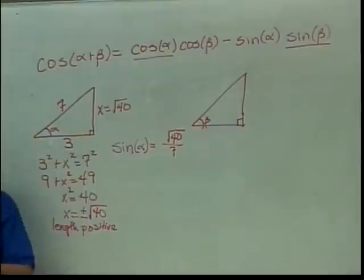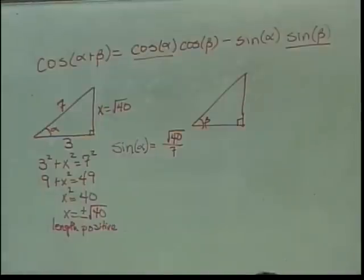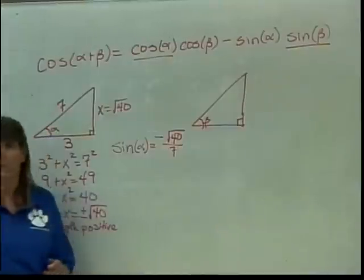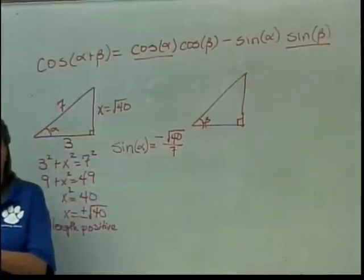Because in quadrant 4. Yeah. Here I'm told alpha is in quadrant 4. The triangle will give me the number. The quadrant will tell me whether it's a positive or negative number. In quadrant 4, my sine values are always negative. Everybody's still okay with the sine values negative in quadrant 4?